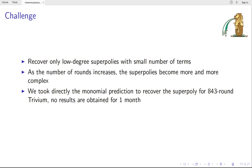However, with the previous method, there exist some challenges. The recovered Super-Polys in literature are all low-degree and with small number of terms. However, as the number of rounds increases, Super-Polys become more and more complex. We took directly the monomial prediction to recover the Super-Polys for 843 rounds of Trivium. Unfortunately, no results are obtained for one month. So, the challenge is how to recover massive Super-Polys.